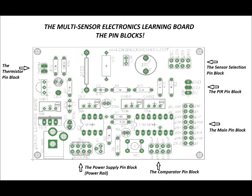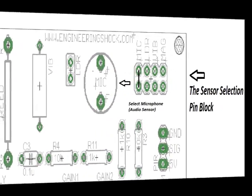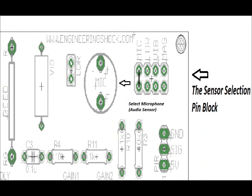We're just about to talk about the sensor selection pin block. There are eight pins, and this is how we will select between our microphone, our light sensor, our vibration sensor, and our magnetic sensor. The sensor selection pin block allows us to choose between these sensors. It has eight pins, and we use a two-pin jumper to connect either the mic pins, the LDR pins, the Vib pins, or the Mag pins.